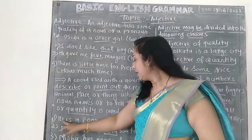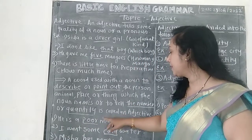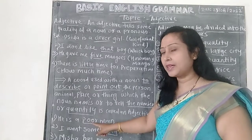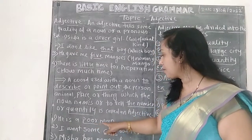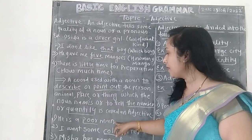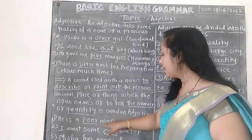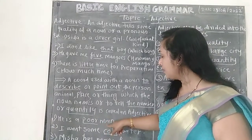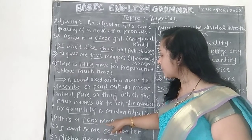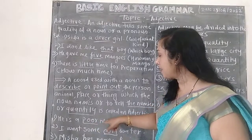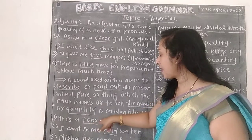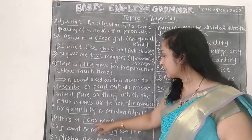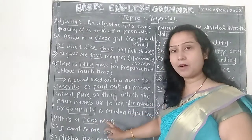Take another example: He is a poor man. Poor is the adjective. Here, 'poor' gives information about 'man.' In this sentence, the noun is 'man.' How is the man? The man is poor. That's why 'poor' is the adjective in this sentence — it gives information about the noun 'man.'